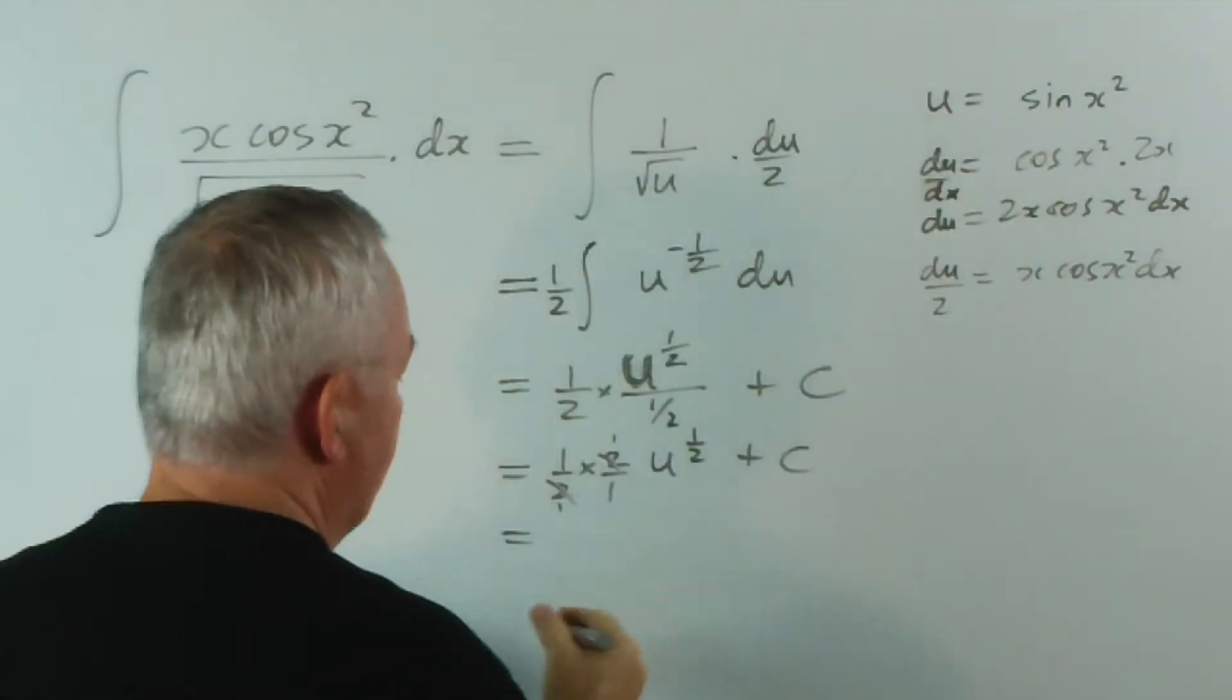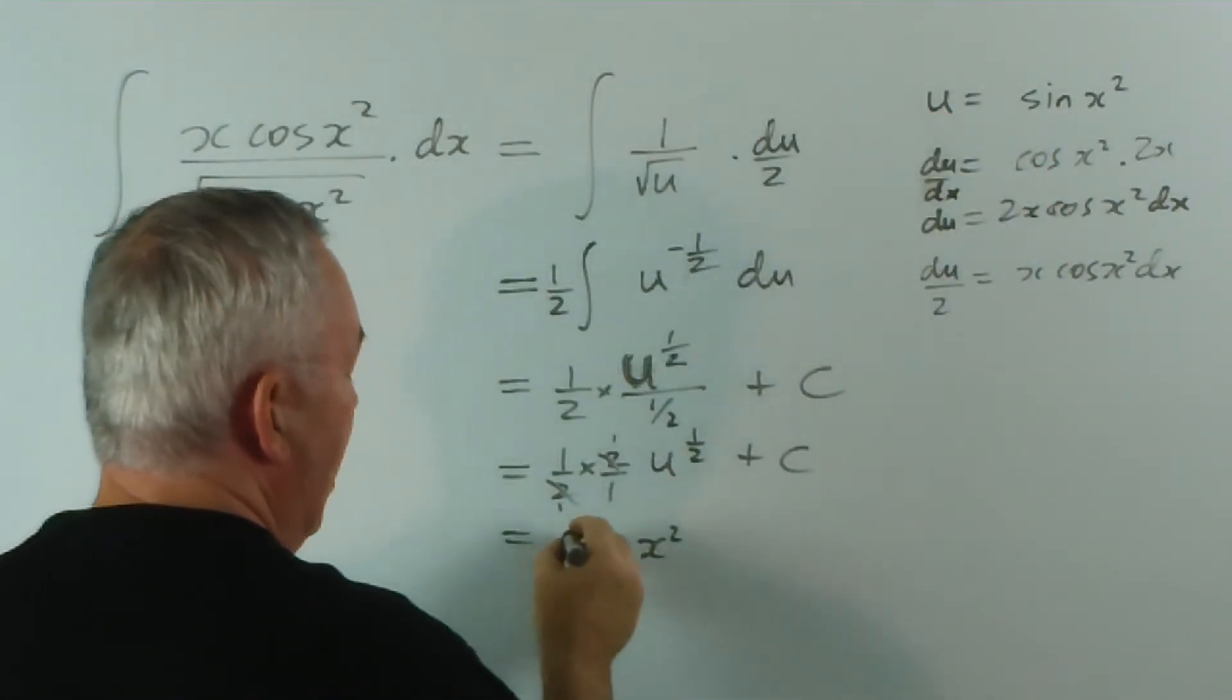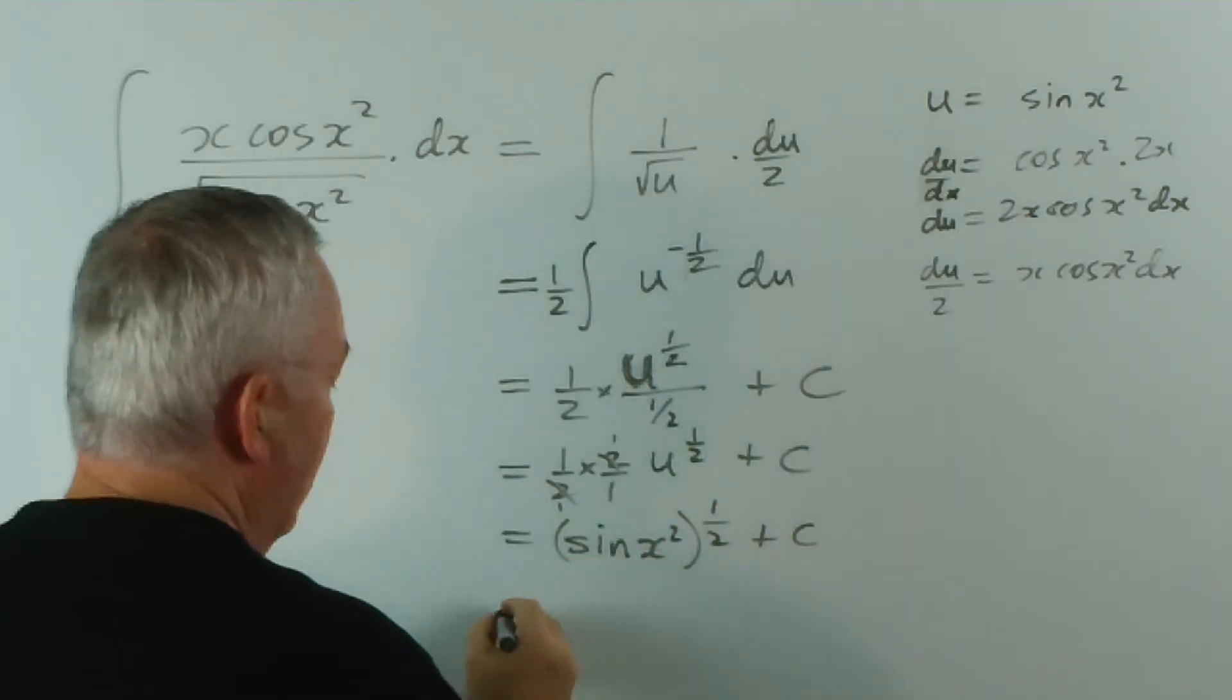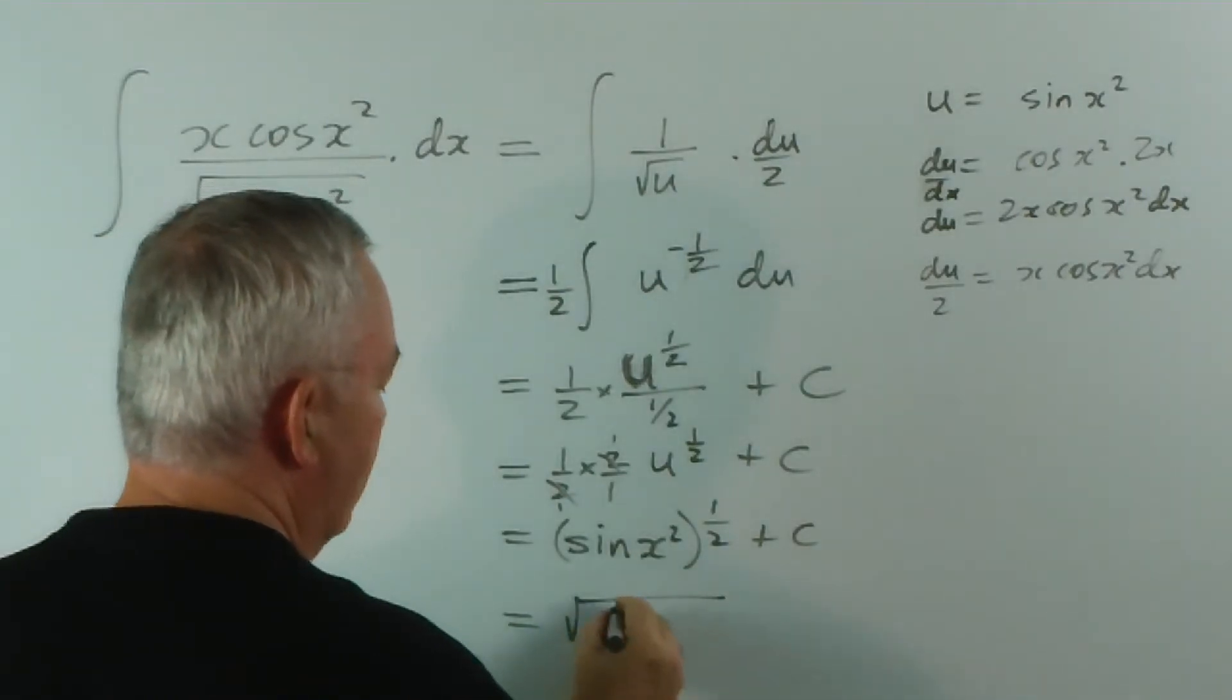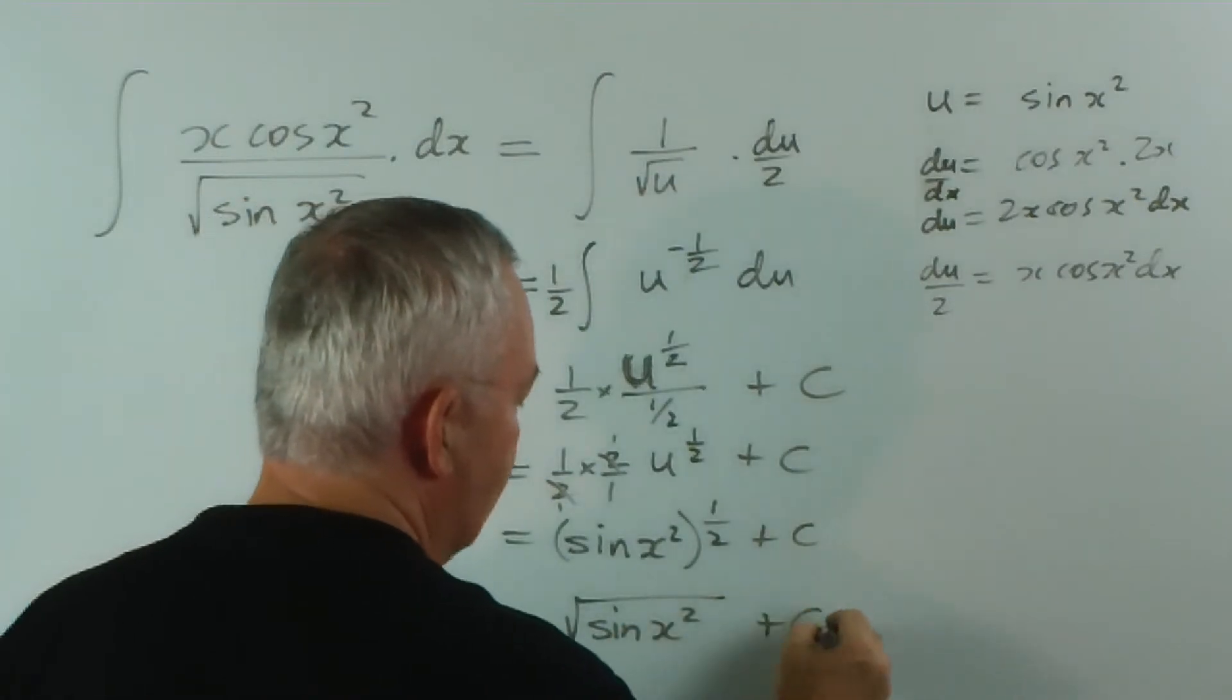And u, you will remember, is this. So it's sin x squared to the power of half plus c. Or if you want to write it with the radical, it's square root of sin x squared plus c.